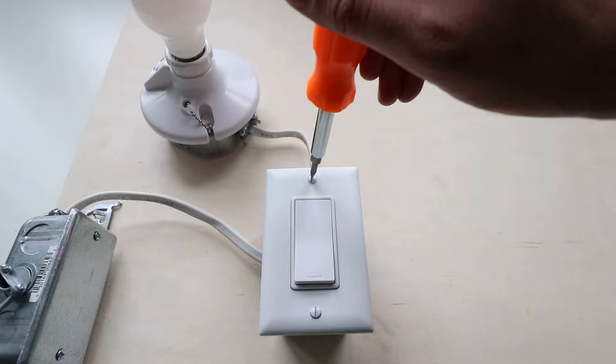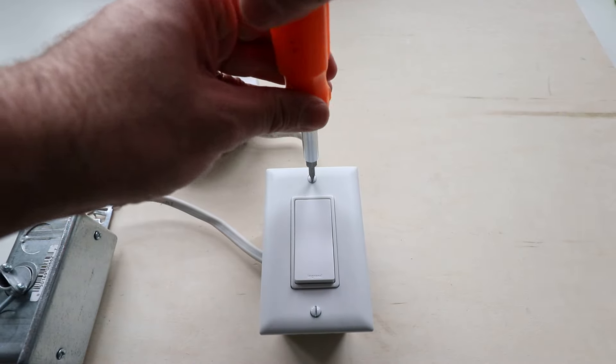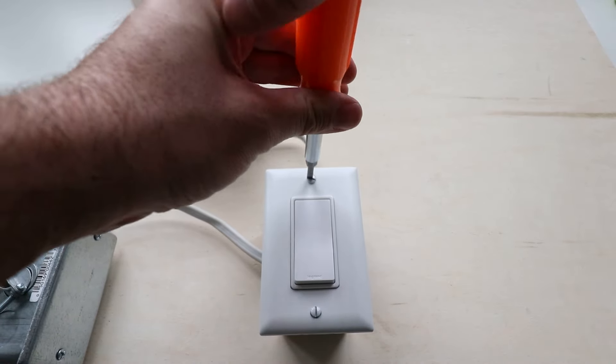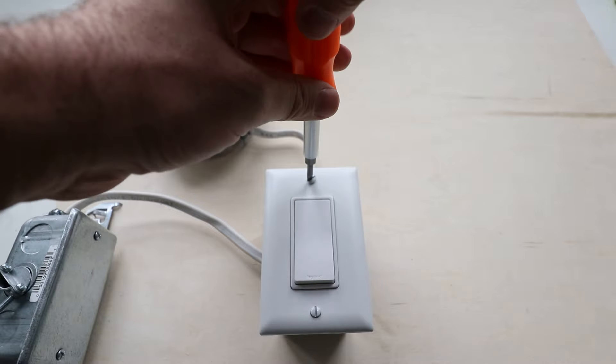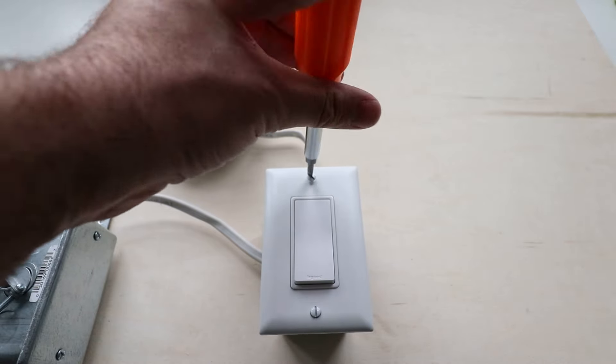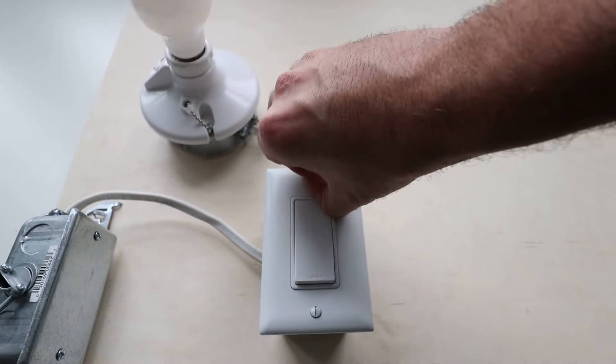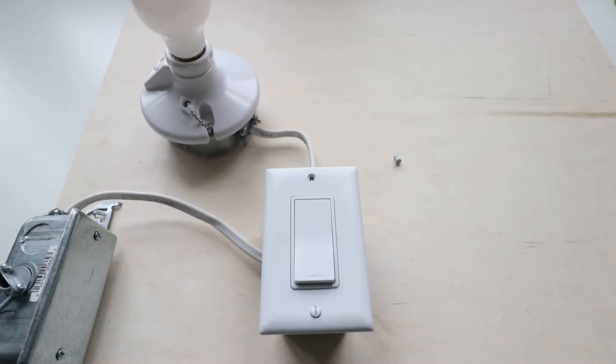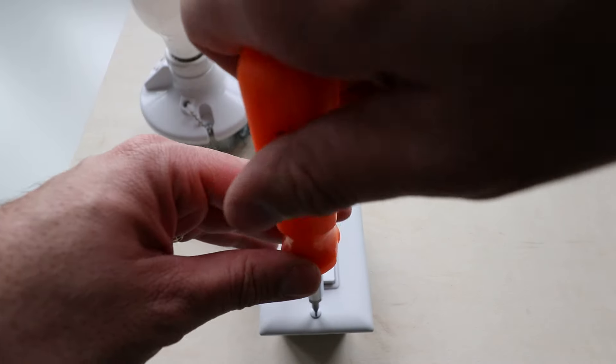The first thing you want to do is make sure you've got the power off, and then you're just going to take off the cover plate for the light switch. Make sure you've turned the power off at the circuit breaker. If you're not sure which one it is, just turn all of them off. It doesn't hurt anything to turn all of them off.